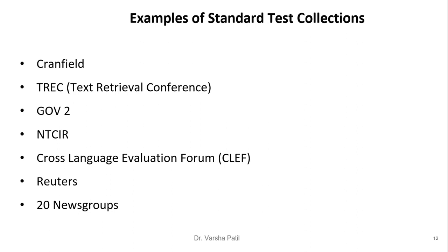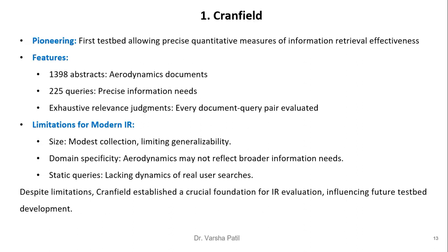The Cranfield collection was the first test bed allowing precise quantitative measures of IR effectiveness. It contains 1,398 abstracts on the topic of aerodynamics, with 225 queries and existing relevance judgments — every document-query pair evaluated by judges. Its limitations include being a modest collection limited to aerodynamics, which may not reflect broader information needs, and having only 225 static queries. Despite these limitations, Cranfield established a crucial foundation for IR evaluation.